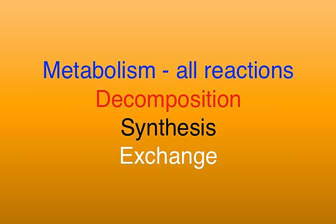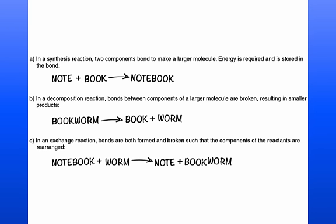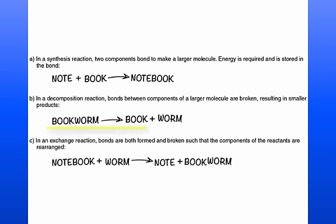Three types of chemical reactions are decomposition reactions, synthesis reactions, and exchange reactions. In a synthesis reaction, two compounds bond to make a larger molecule, and energy is required and stored in the bond. In a decomposition reaction, bonds between components of a larger molecule are broken, resulting in smaller products. In an exchange reaction, bonds are both formed and broken, and the compounds of the reactants are rearranged.